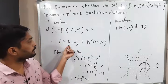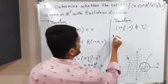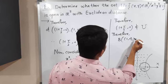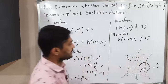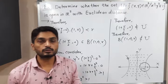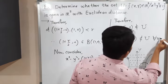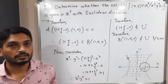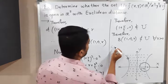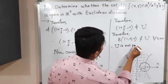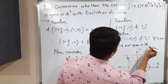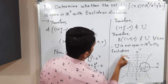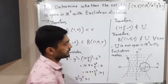We found a point that is a member of the ball but not in U. Therefore, the open ball with center (1, 0) and radius R is not a subset of U. This is true for all R > 0, so the definition of open set is not satisfied. Therefore, U is not open in R² with the Euclidean metric.